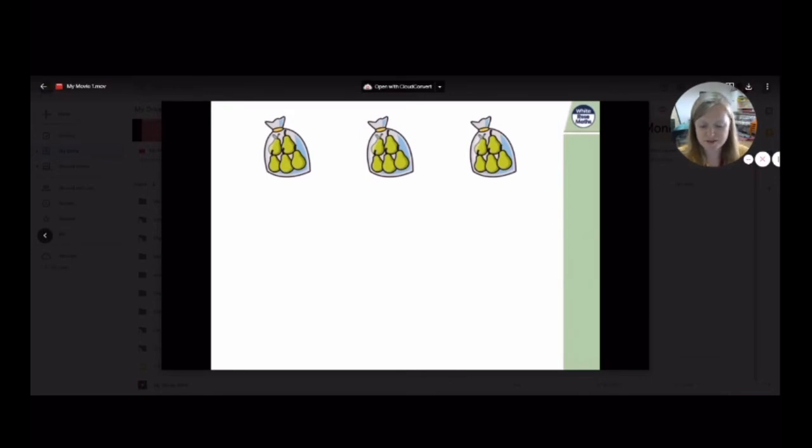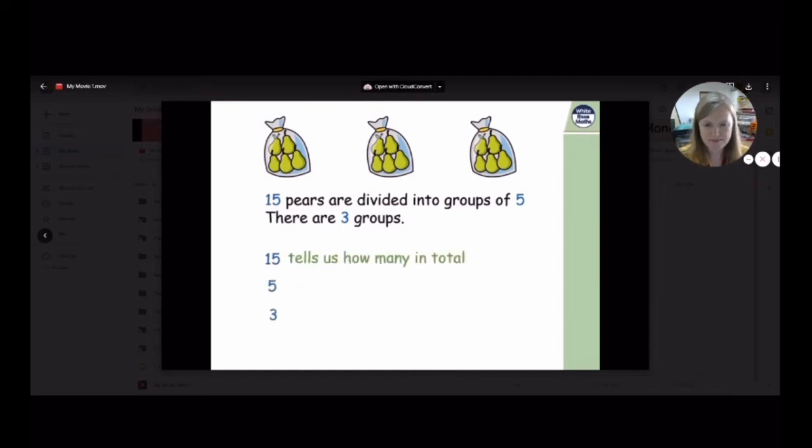Here are some pairs that have been grouped. They've been grouped into fives. There were 15 pairs altogether and they've been divided into groups of five, three groups of five. The three numbers here are 15, five, and three. 15 tells us how many there are altogether. Five tells us how many are in each group and three tells us how many groups there are. When we write this in a number sentence, it looks like this. 15 pairs in total divided by five or into groups of five is equal to three groups. 15 divided by five is equal to three.